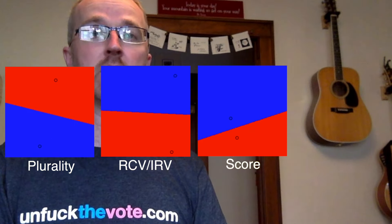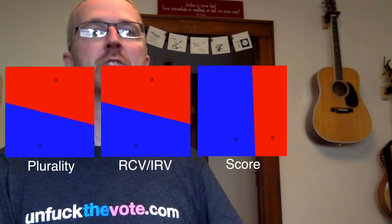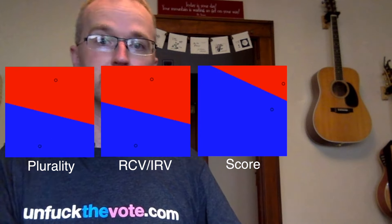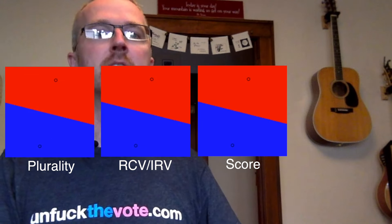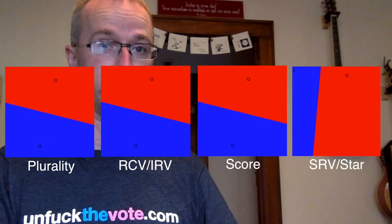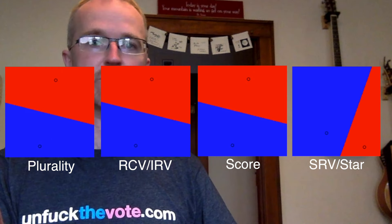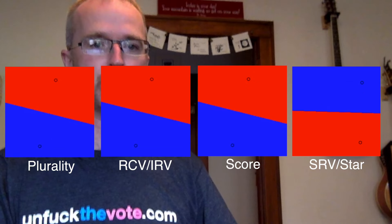We'll look at score voting. So ranked choice lets you rank candidates one, two, three. Score voting lets you score them zero to five or zero to nine. And then finally, we'll look at score runoff voting, also known as star voting, which starts with score voting and then adds an automatic runoff step to correct distortion.